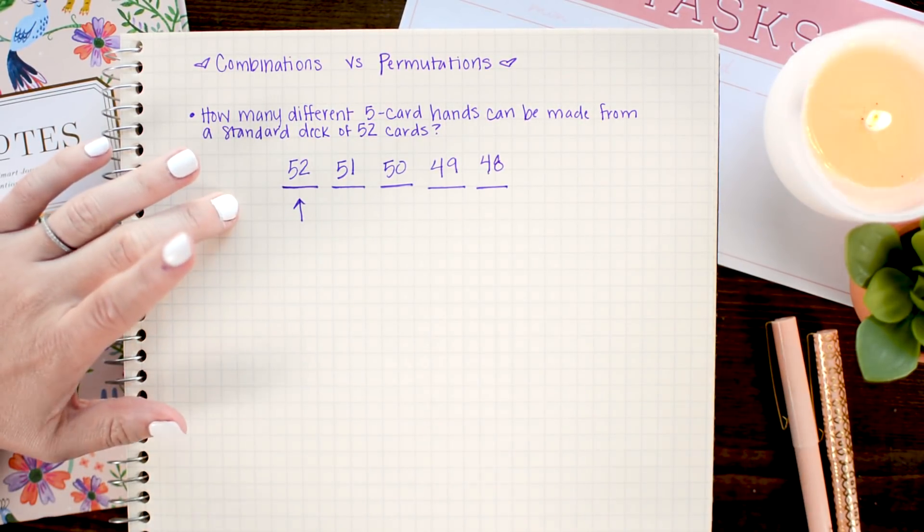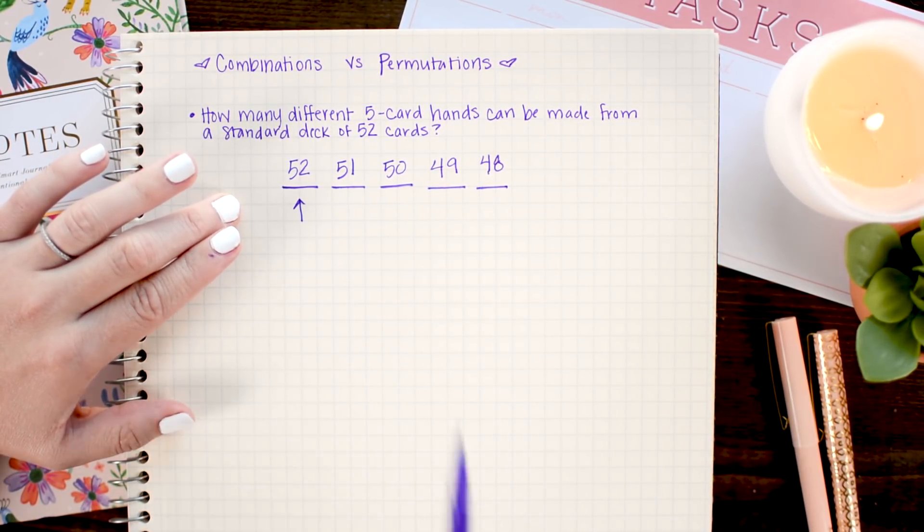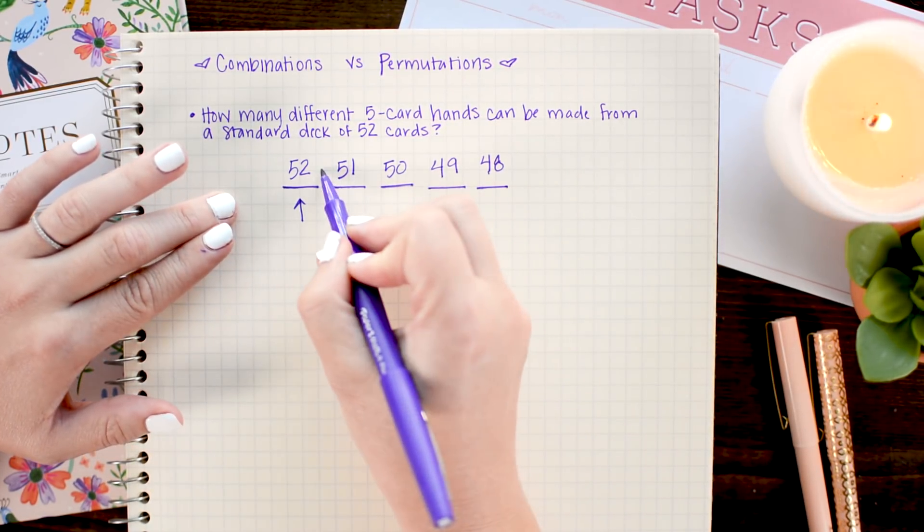Now, whenever you're counting the different ways of doing things, you want to use the multiplication principle. So to figure out how many different permutations we have of these, I'm going to multiply all them together.